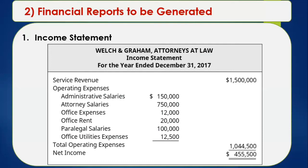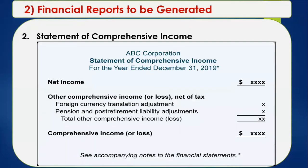Another financial statement is the statement of comprehensive income. The difference between this and the income statement is that the statement of comprehensive income will show not only the results of operations but also other items like foreign exchange translation gains and losses. As you can notice, there are three additional items shown in the comprehensive income statement: foreign currency translation adjustment, pension adjustments, and post-retirement liability adjustments.